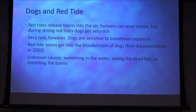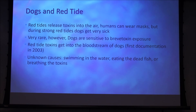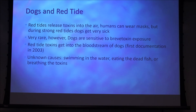Regarding pets — dogs in red tides: red tides release toxins into the air, and while humans can wear masks at the beach, dogs can get very ill during red tides. It is relatively rare, but dogs have been shown to be sensitive to brevetoxin exposure. The toxin gets into the bloodstream of dogs. It was first documented in 2003, though it's still unknown whether dogs are affected by swimming in the water, eating dead mammals killed by the disease, or breathing in the toxins.